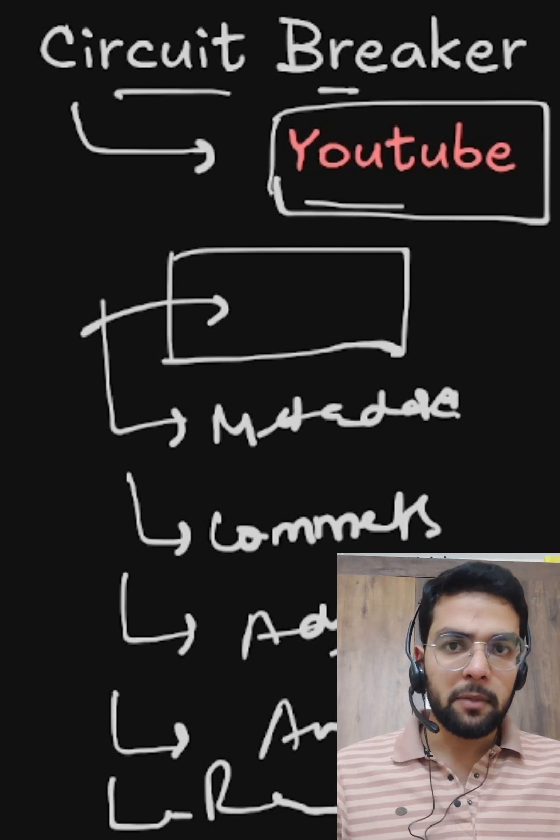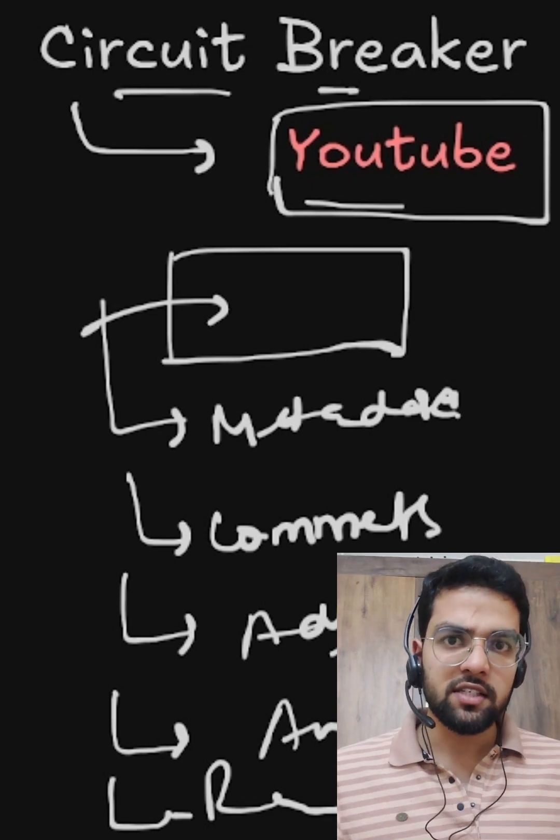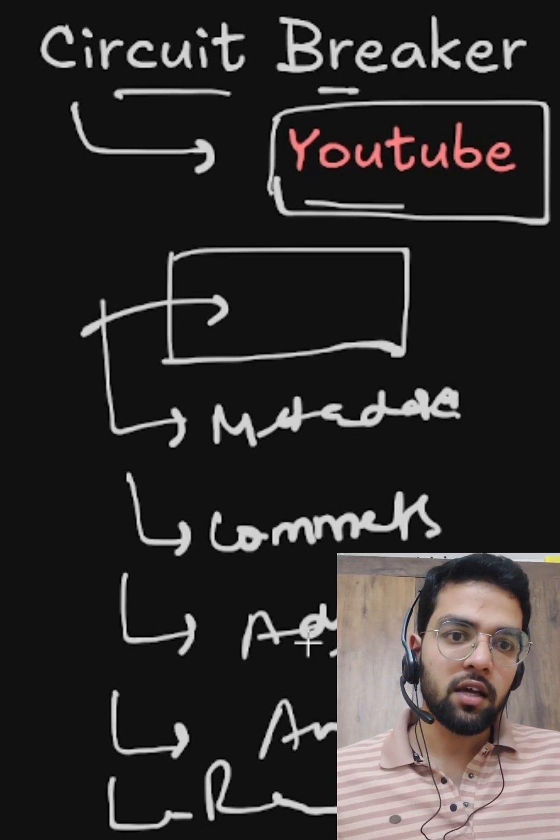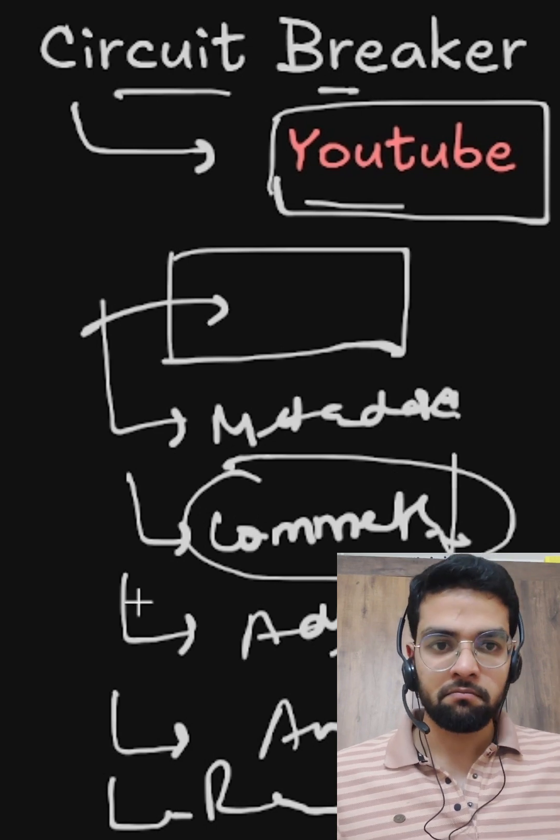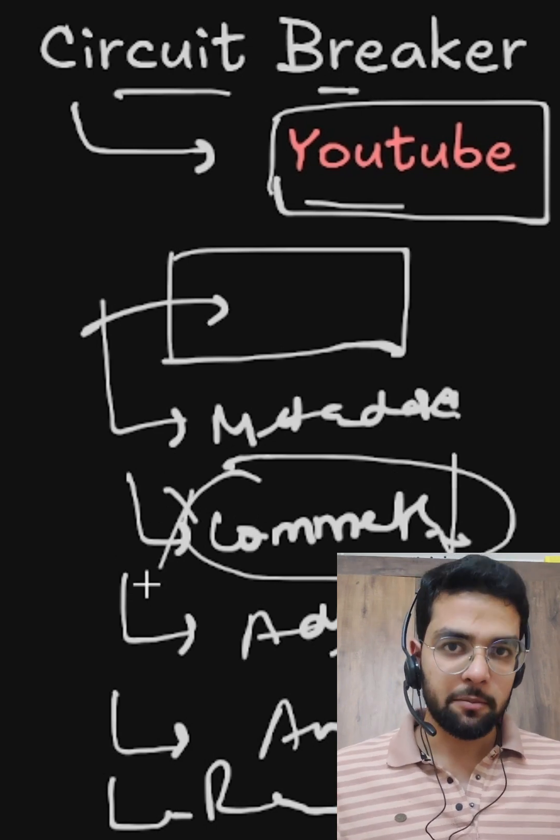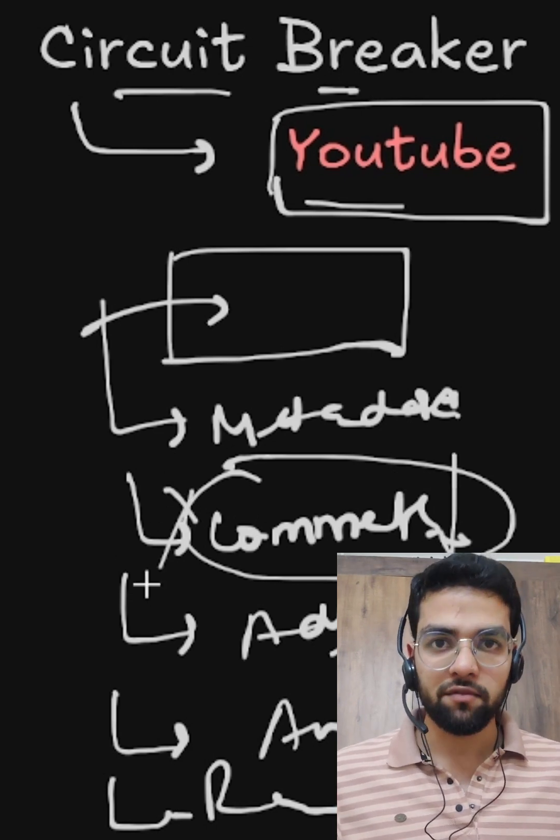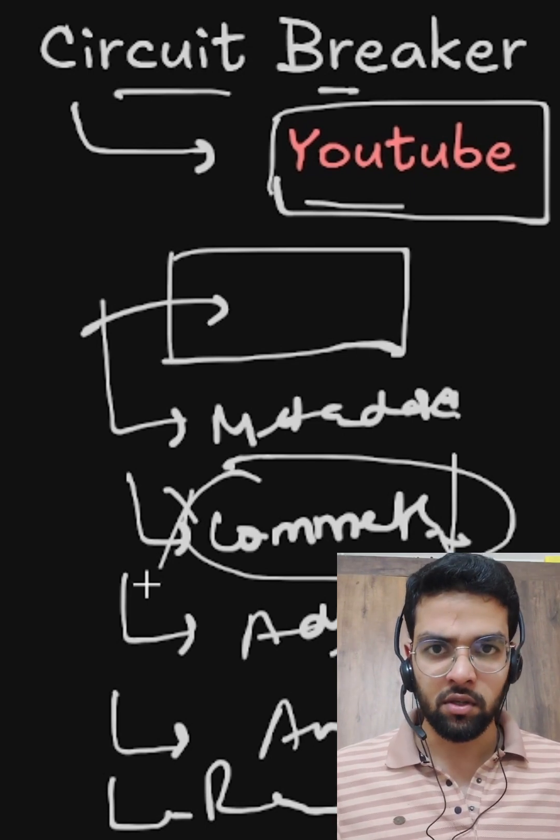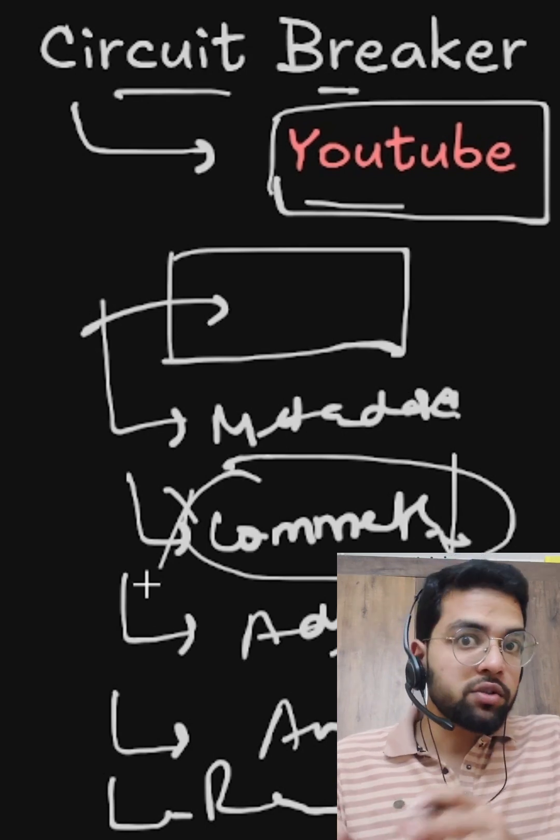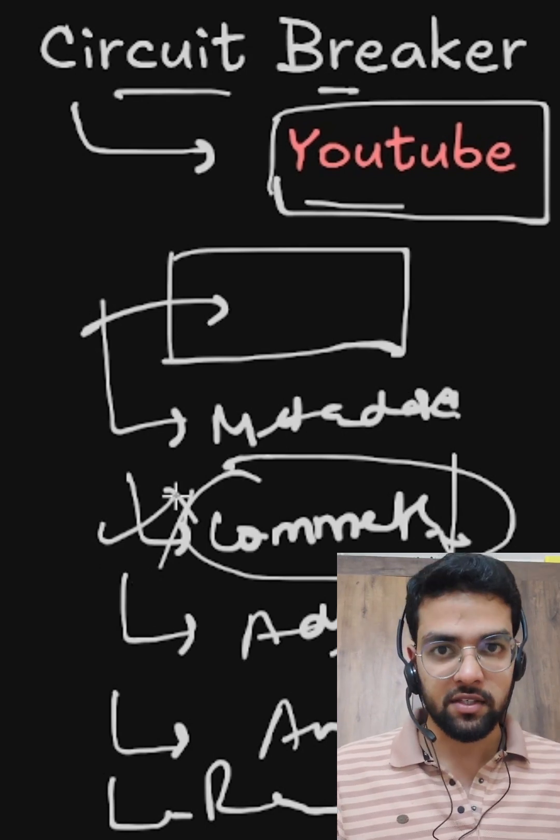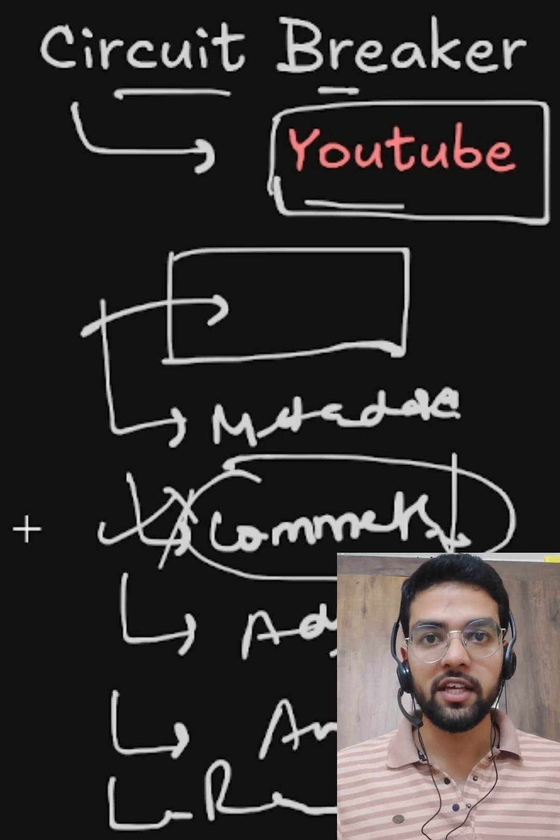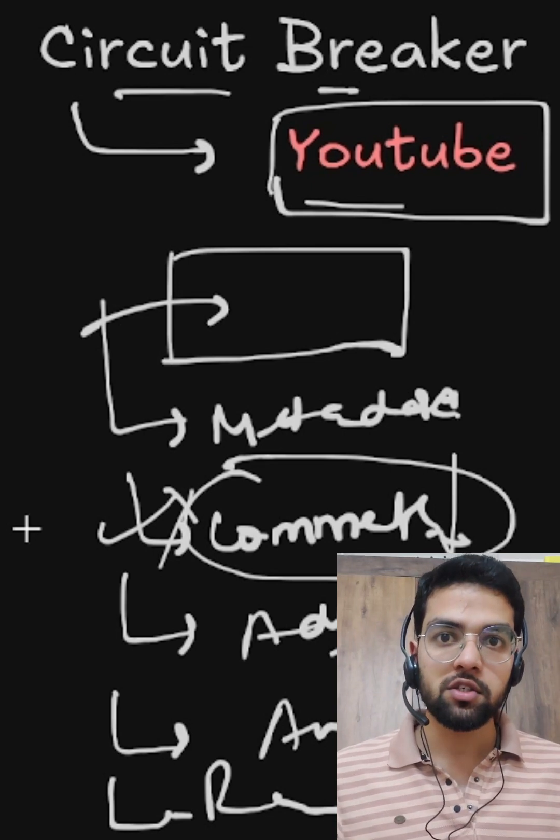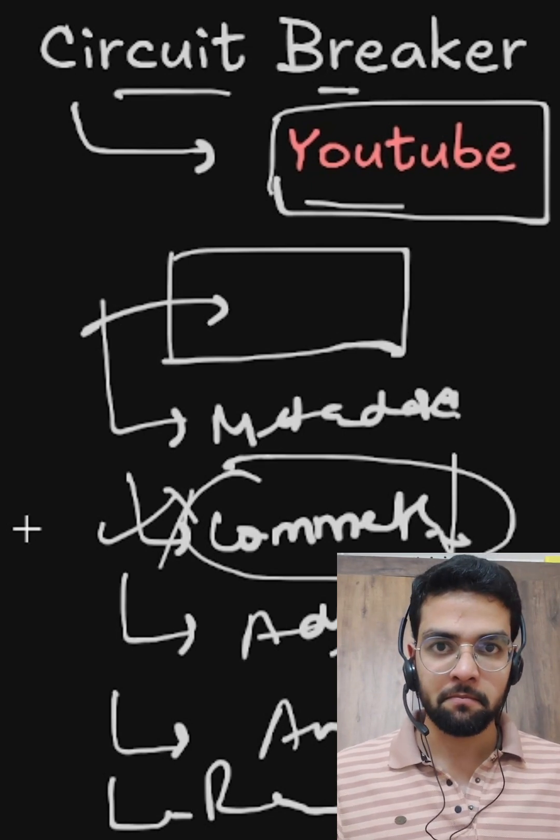Please understand the scenario. Suppose out of these services, if any one of the services goes down, let's say comment service goes down. Without Circuit Breaker, there are billions of users clicking on some videos. That means YouTube will call the comment service. Your browser hangs on a loading screen. YouTube server flooded with hanging requests. No videos load for anyone.